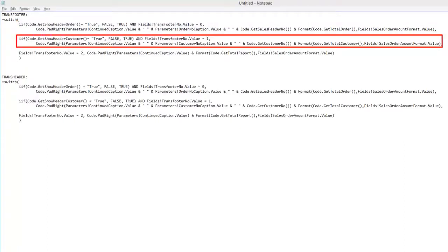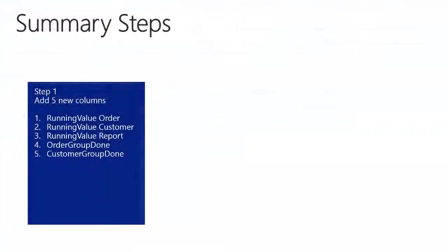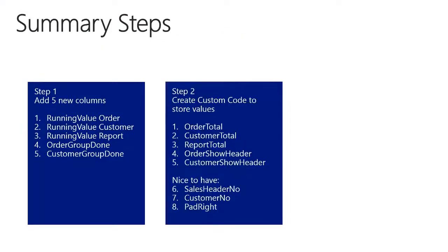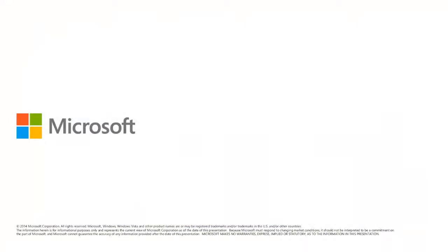If the end user selects customers on the request page and the customer orders are not completed on the current page, the second case will be true. And at last, if the end user has selected all customers on the request page, the third case will be true and TransFooter will be shown on all pages except the last, and TransHeader will be shown on all pages except the first. To summarize: you saw how I added the five columns in the body of the report, then how I created the custom code to store the values in the page footer, then how I added the seven fields in the page footer, and finally we examined the TransFooter and TransHeader expressions. I hope you enjoyed this video. I am Klaus Lundström, MVP for Microsoft Dynamics NAV.